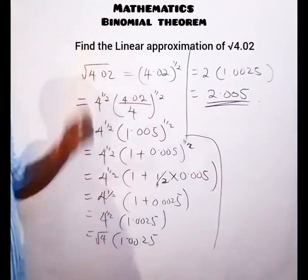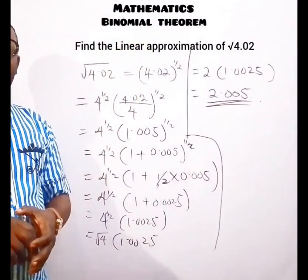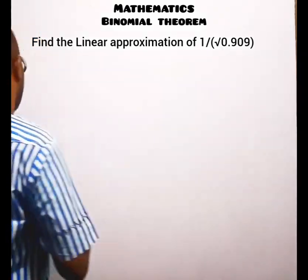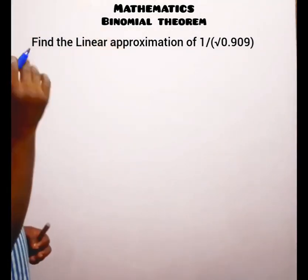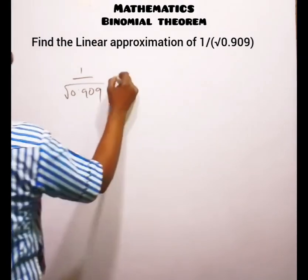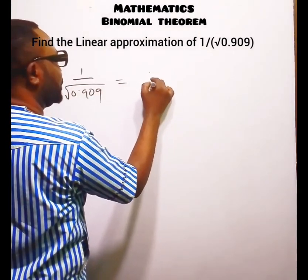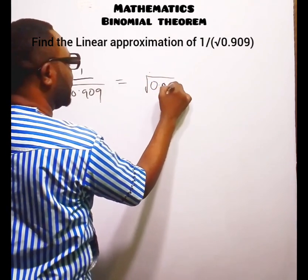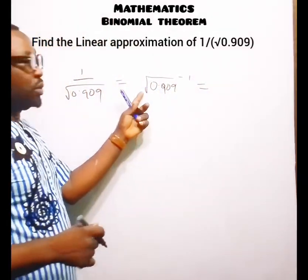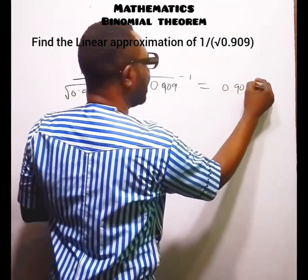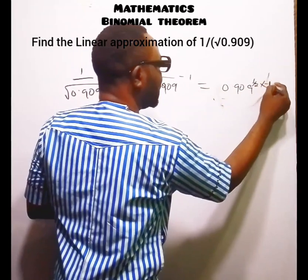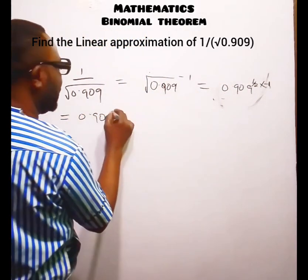That is the answer — the linear approximation of the square root of 4.02 is 2.0025. The next question asks us to find the linear approximation of 1 over the square root of 0.909. This equals (root of 0.909) raised to the power of minus 1, which means 0.909 raised to the power of minus one-half.